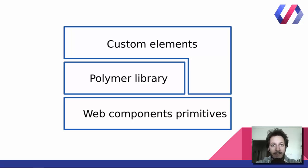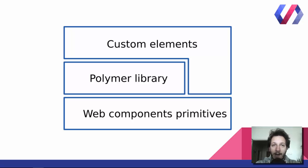Let's recap. Polymer is a library to build web components. It makes it faster and easier to build web components, which you can use everywhere. Keep in mind that Polymer is not a framework. Web component primitives is not a framework. The advantage of the Polymer library is that if you build web components with Polymer, you can use these with other frameworks.